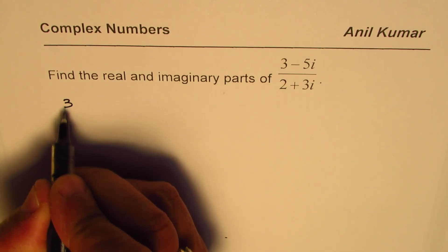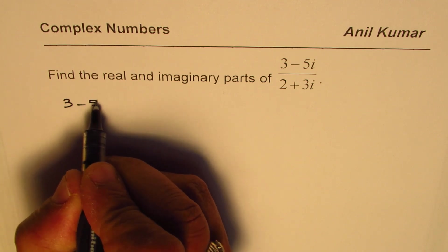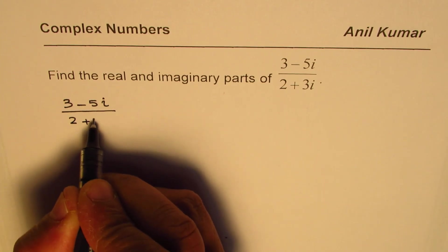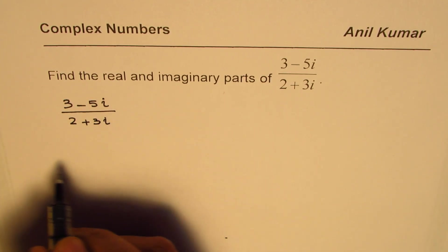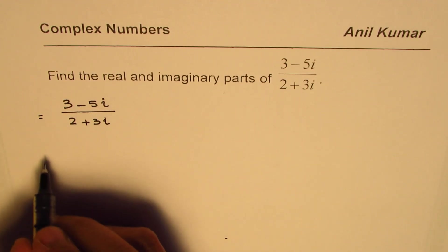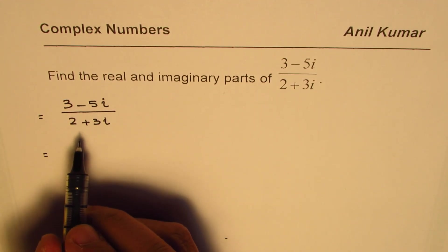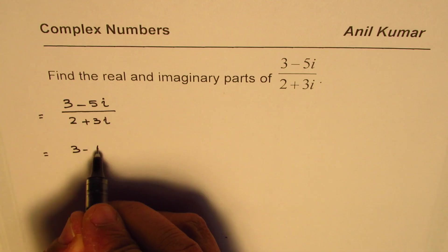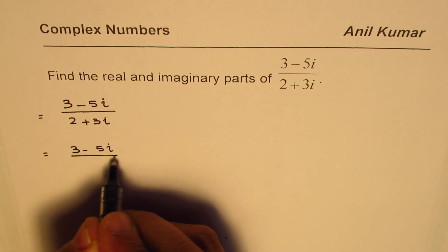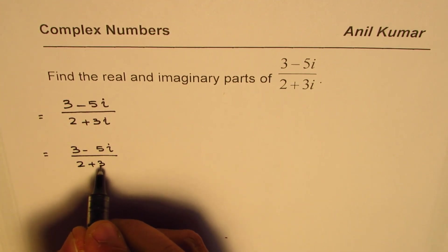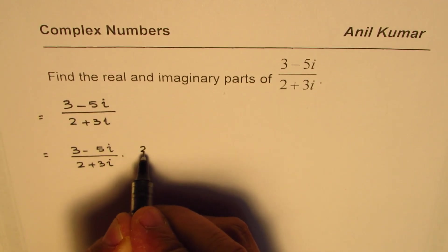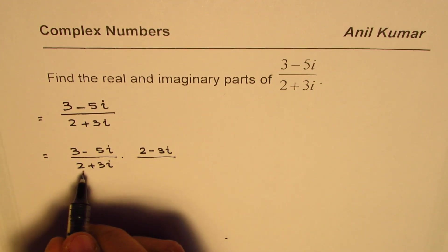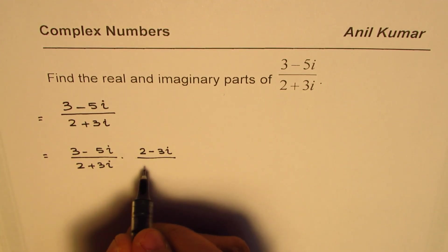We are given the complex number 3 minus 5i divided by 2 plus 3i. If we multiply and divide this complex number by the conjugate of the denominator, then see what happens — we multiply and divide by 2 minus 3i, which is the conjugate of the denominator 2 plus 3i.